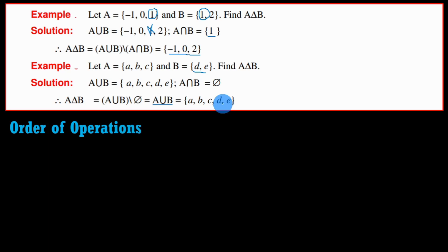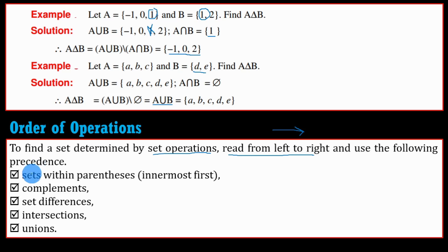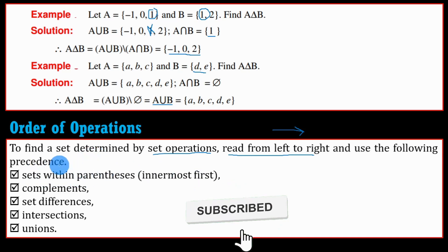Now let's look at the orders of operation for set operations — how to find the result when multiple set operations are combined. The procedure is: read from left to right, and use the following precedence. Evaluate sets in parentheses or innermost brackets first.